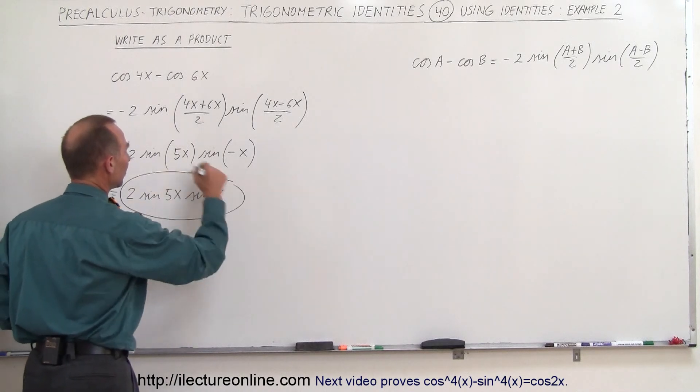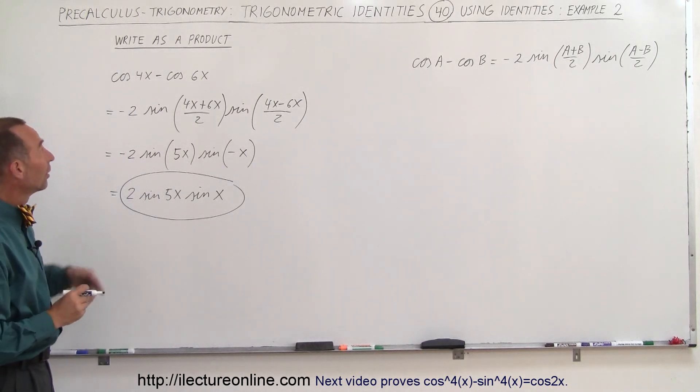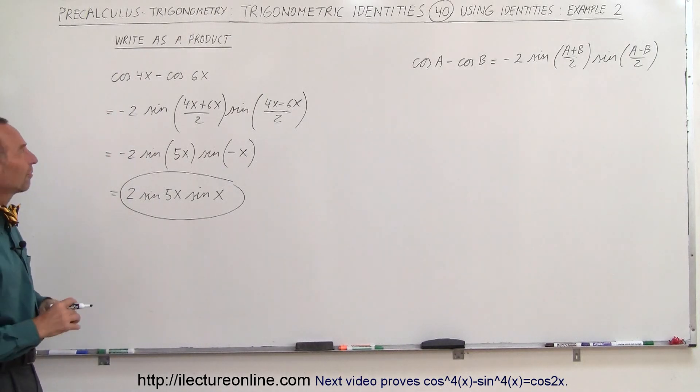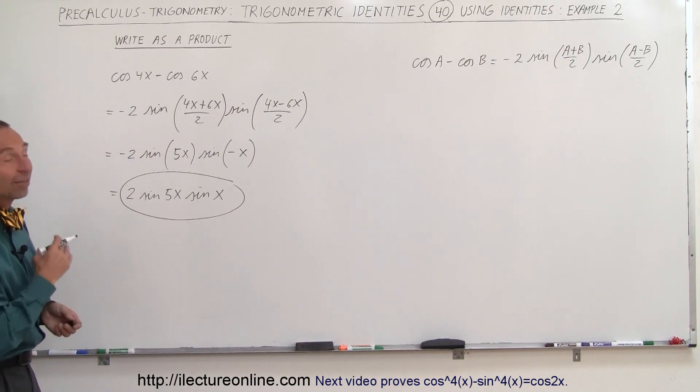And that would be the simplified form in product form. Starting with the sum—in this case, of course, the difference between two cosines—that's how we do that.